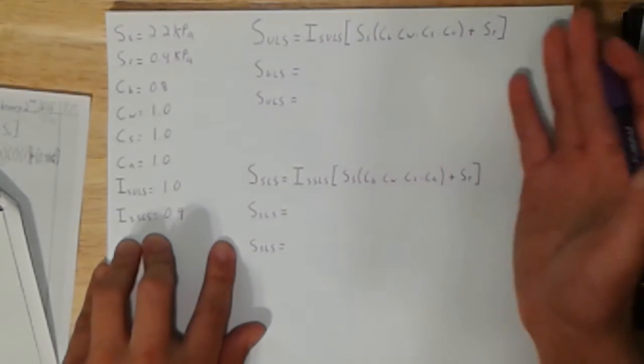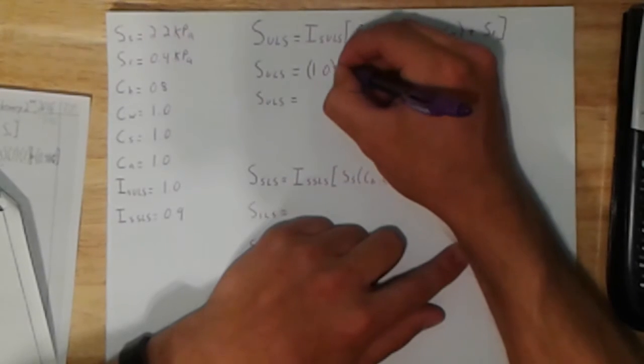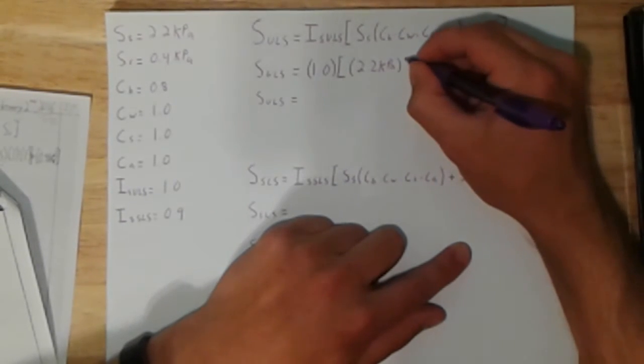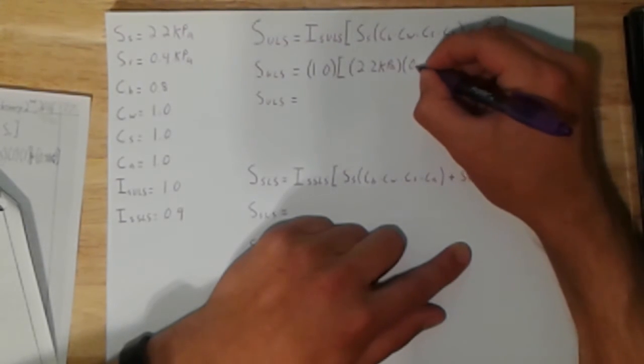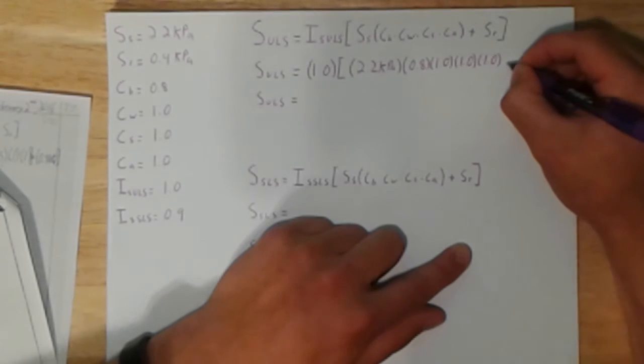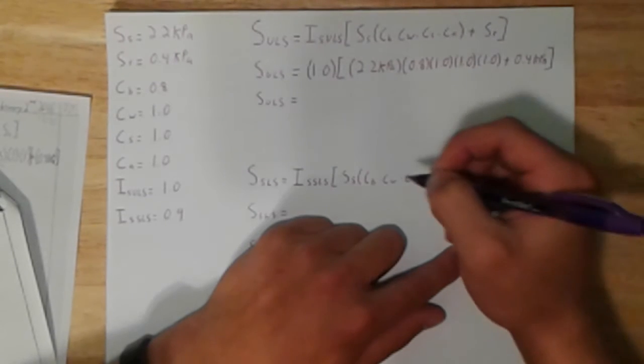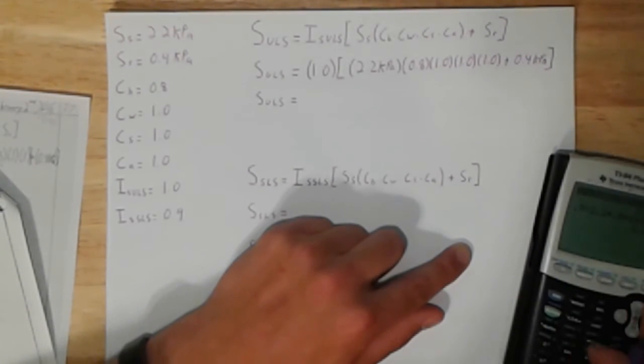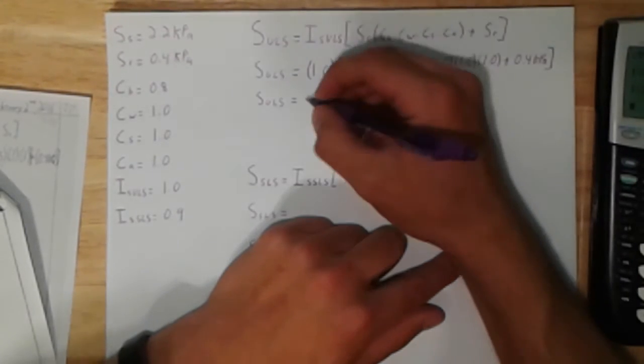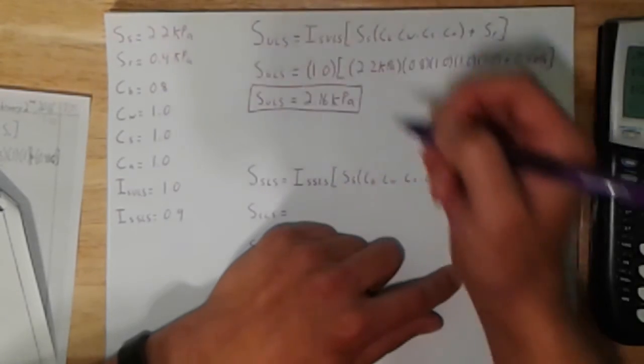So now we have everything here. All we got to do is just punch it in and we'll get the right numbers, hopefully. So IS for ULS is going to be 1.0. Multiply that by SS which is 2.2 kilopascals. Don't forget, put your units in. We're going to multiply that by 0.8, 1.0, 1.0, 1.0. And we're going to plus that by 0.4 kilopascals. And we're going to close that off. Now that answer gives me - I already did it in my calculator. Let's go with 3 sig figs. Why not? 2.16 kilopascals. That's for your ULS.